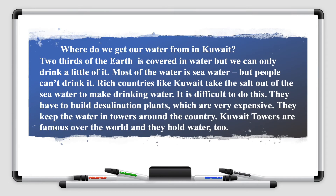Where do we get our water from in Kuwait? Two-thirds of the earth is covered in water, but we can only drink a little of it. Most of the water is seawater, but people can't drink it. Rich countries like Kuwait take the salt out of the seawater to make it drinking water. It is difficult to do this. They have to build desalination plants, which are very expensive. They keep the water in towers around the country. Kuwait towers are famous over the world and they hold water too.